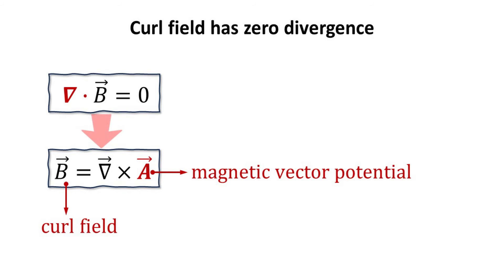In other words, the divergence of a curl field is always zero. The vector field A is called the magnetic vector potential.